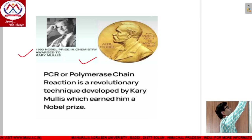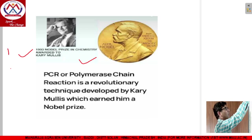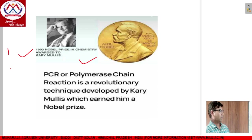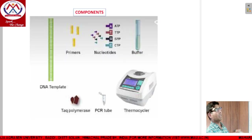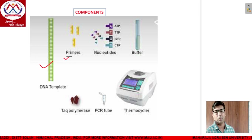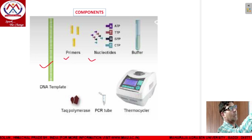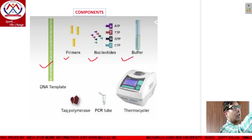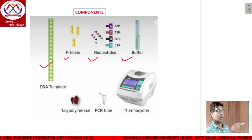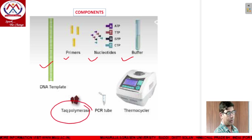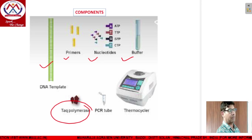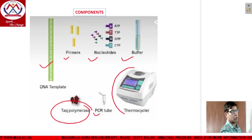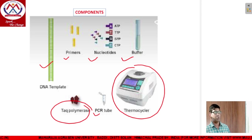What are the different components used in a PCR reaction? The first one is a DNA template. The second one is primers — the forward and reverse primer. Then a basic set of DNA nucleotides, a buffer which has different cofactors, Taq polymerase — the key enzyme used in PCR — PCR tubes, and the thermocycler machine which amplifies a particular segment of the DNA.